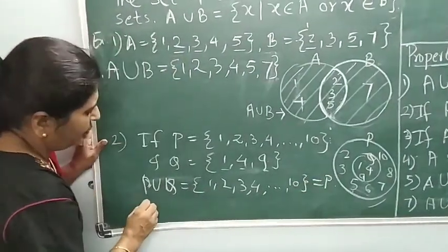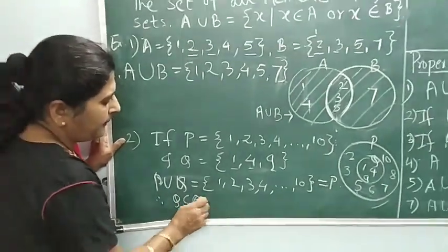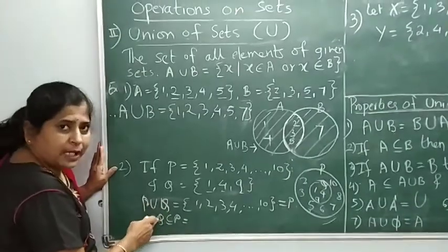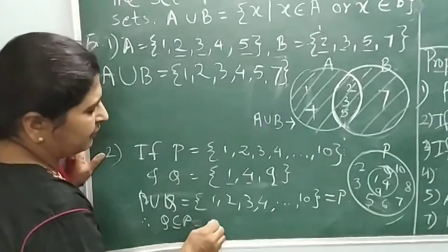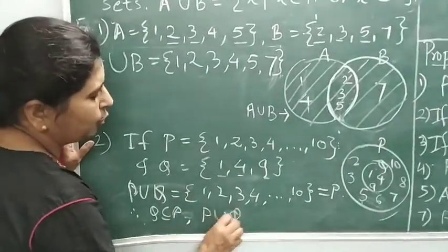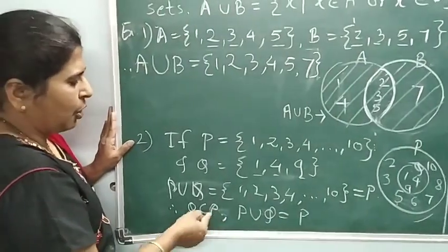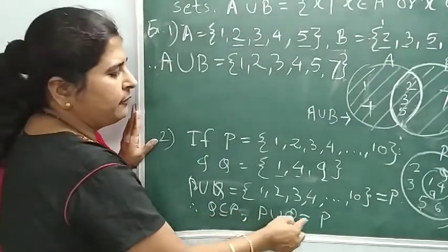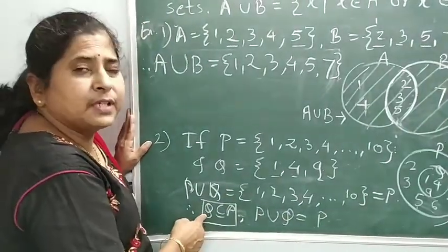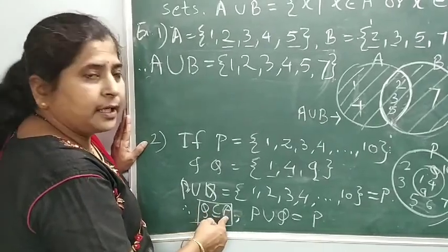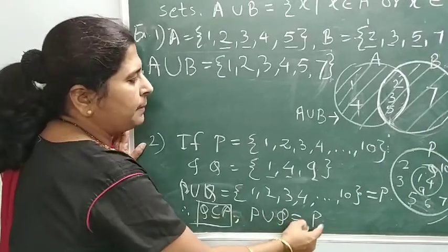So P union Q is nothing but again equal to P. So when Q is a subset of P, all elements of Q are elements of P. In that case, we found that P union Q equals P, which is the bigger set. For intersection we got Q and for union we got P. So for intersection we got the smaller set and for union we got the bigger set P.